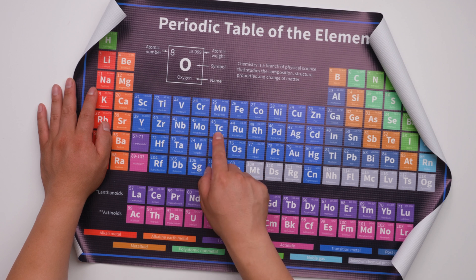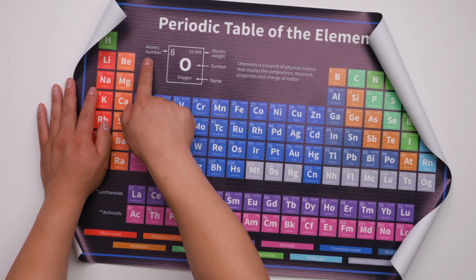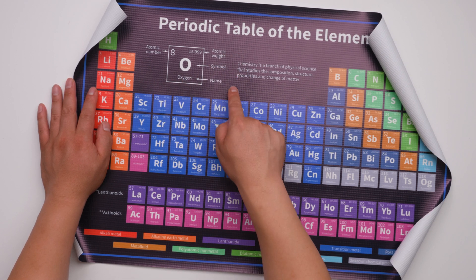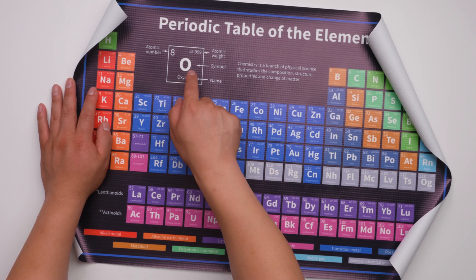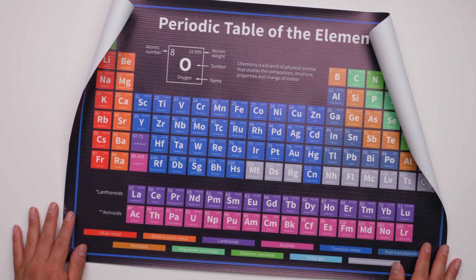Every block comes with very detailed information. This is the number, this is the weight, symbol name, this is the full name, and this is the short name.